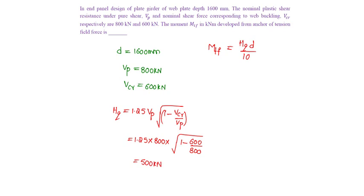So, substituting HQ is 500 into D is 1600 by 10, which is equal to 80 kNm. So, the answer is 80.